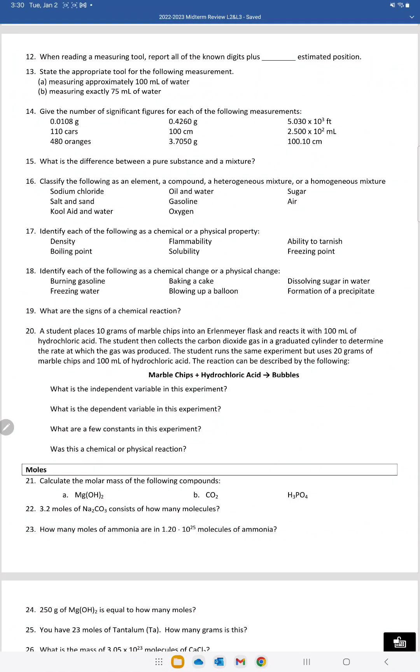We're on questions 12 through 23 now on the review sheet, so let's keep going. When reading a measuring tool, you report all of the known digits plus one estimated position. That's what we did on question 11. As you look at the tool, you find the smallest marking, estimate one position beyond.